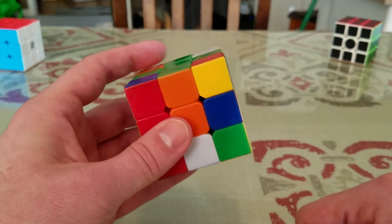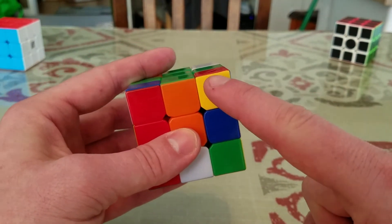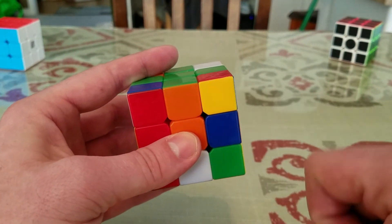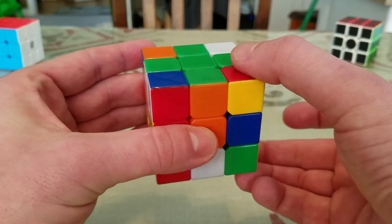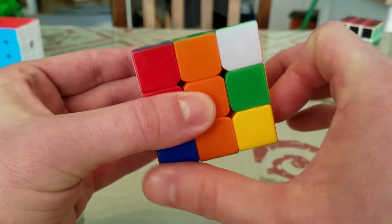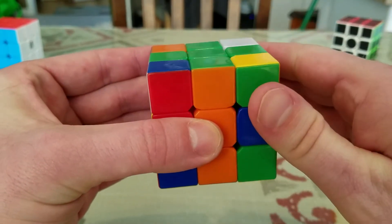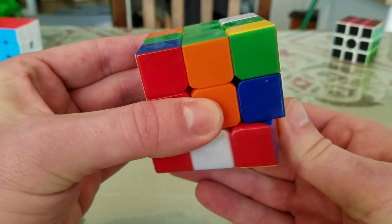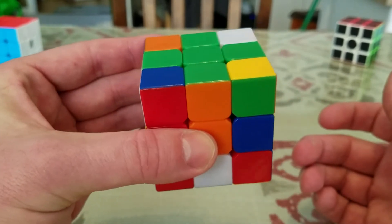So the move to position a corner from the bottom up into the top is as follows. You turn the side down, then you turn the bottom, then you put the side back up, and then you turn the bottom back. That's it. Four easy steps.